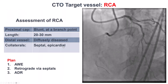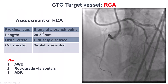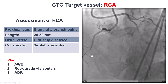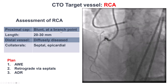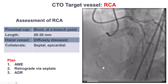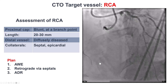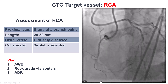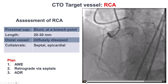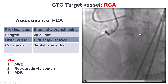To summarize: we have a well-defined but blunt proximal cap, length of about 20-30 mm, a diffusely diseased distal vessel, and we do have septal and epicardial collaterals. The plan was to try antegrade wiring first, followed by retrograde through septals, followed by ADR if the other techniques failed.